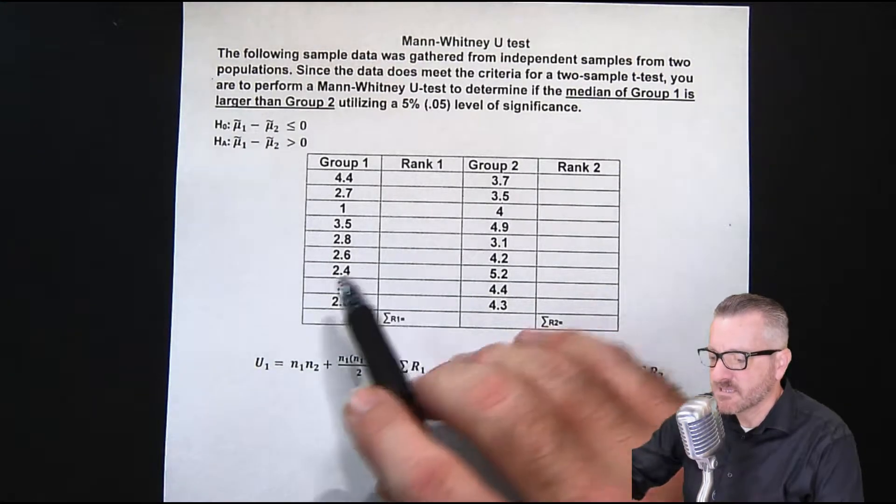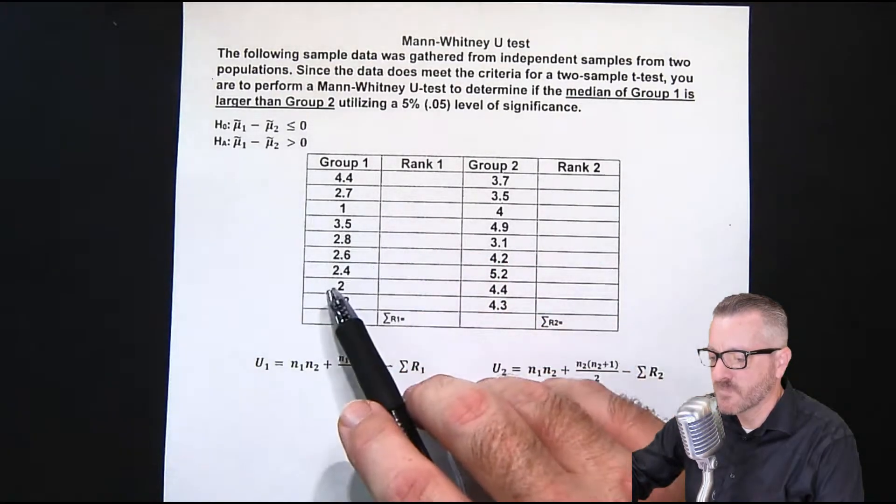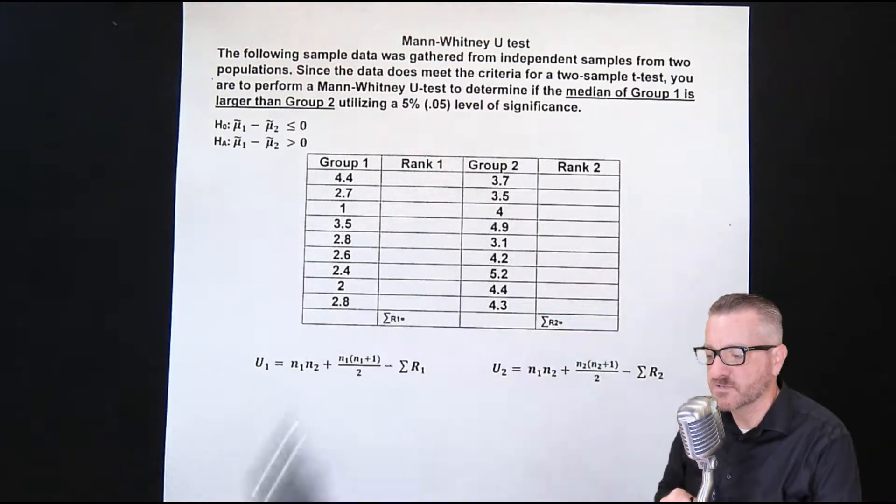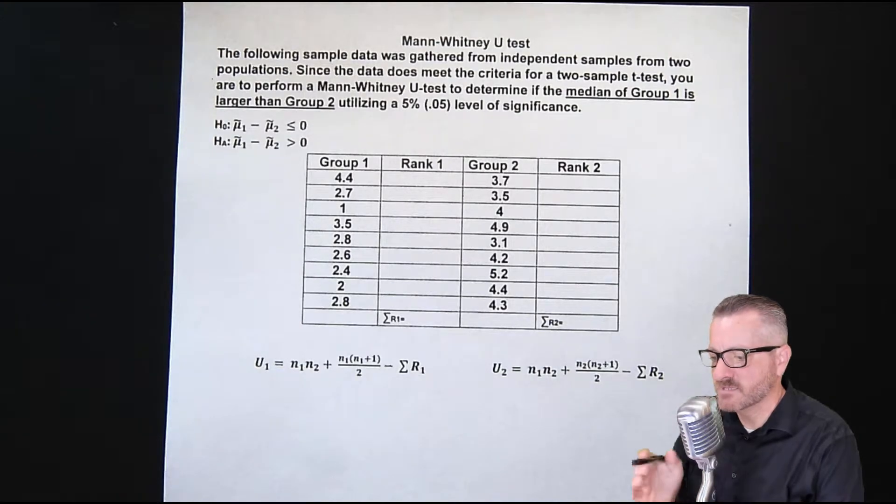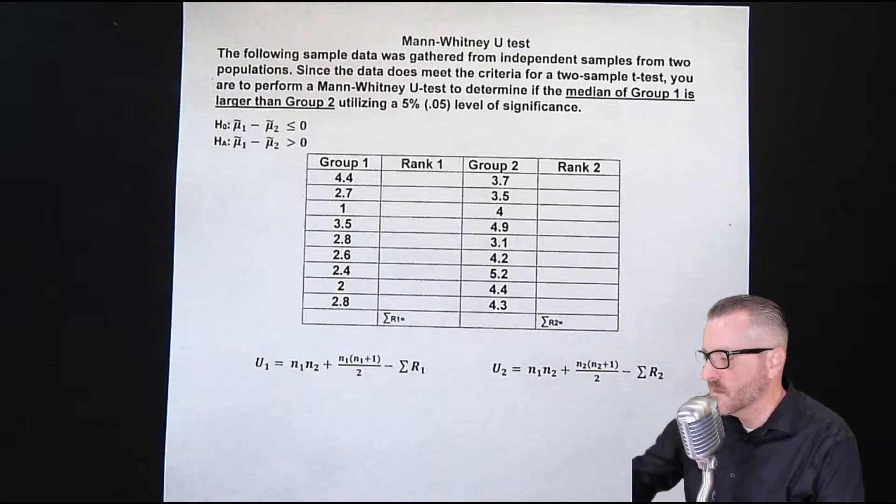But, usually with these tests, they want the two sample groups to have a similar distribution, but it doesn't have to be a normal distribution, meaning they could both be heavily skewed. And that's usually something that comes up, because they're trying to compare it that way as well.